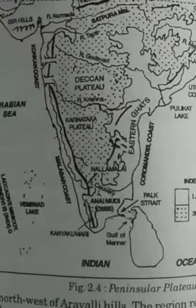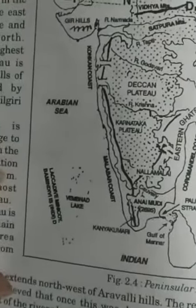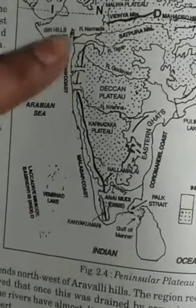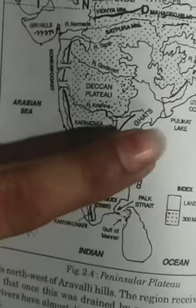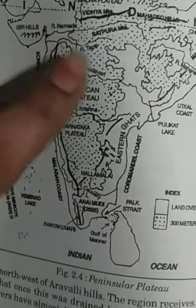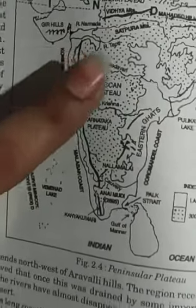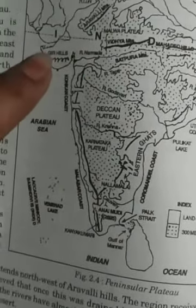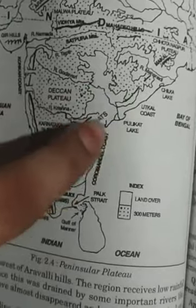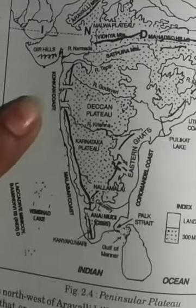This plain is drained by several short and swift streams which are unable to form deltas. Rivers flowing from east to west — like the Narmada and Tapi — do not make deltas here; they make estuaries. In contrast, rivers which flow from west and move eastward make deltas on that side.